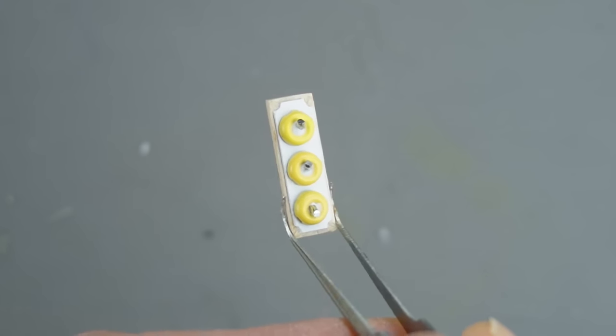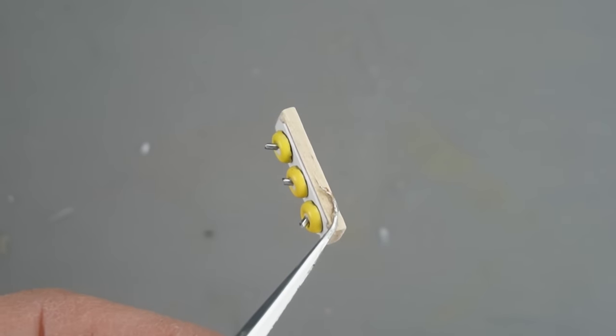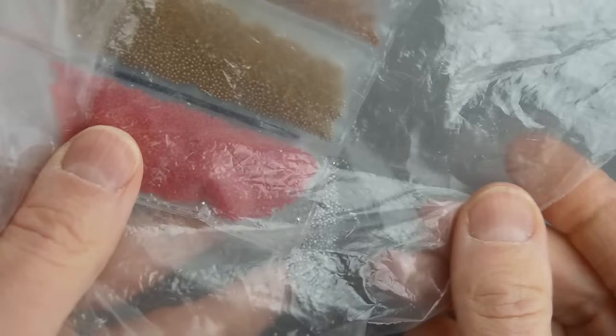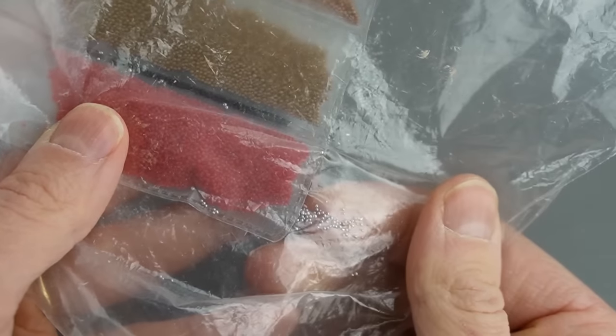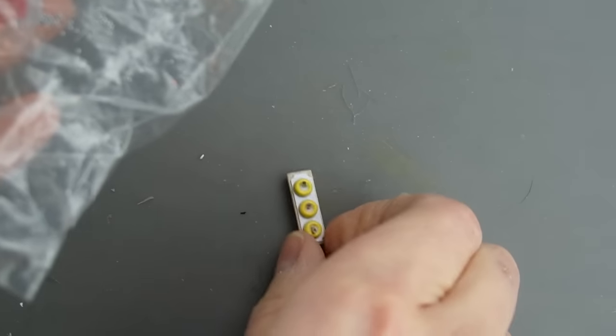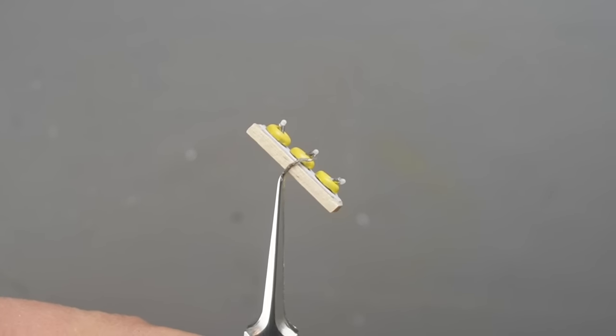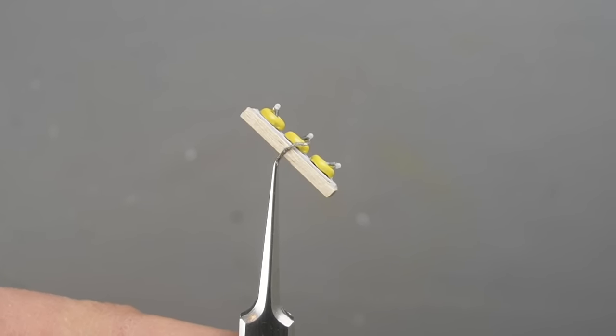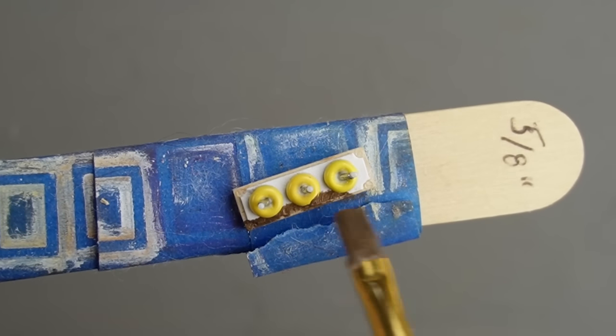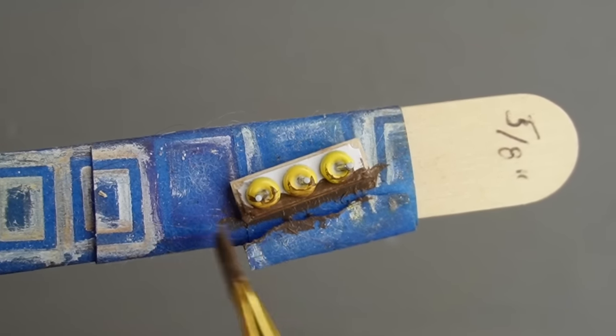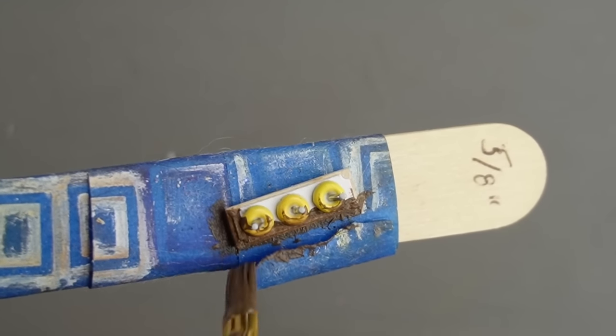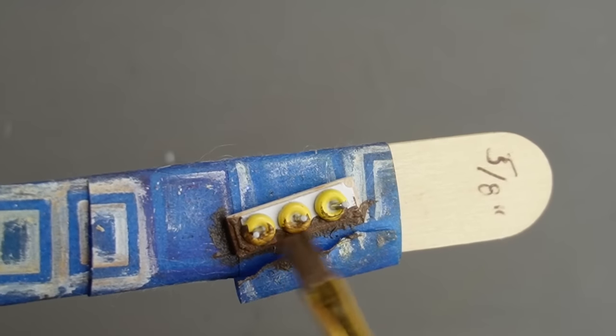I cut all 3 pieces of paperclip, but once I started adding them I realized they were too long. I should have cut one first and tested the length before cutting all 3. I'm attaching newly cut shorter pieces of paperclip using white glue. I'm positioning 2 of the switches in the on position and 1 in the off position.